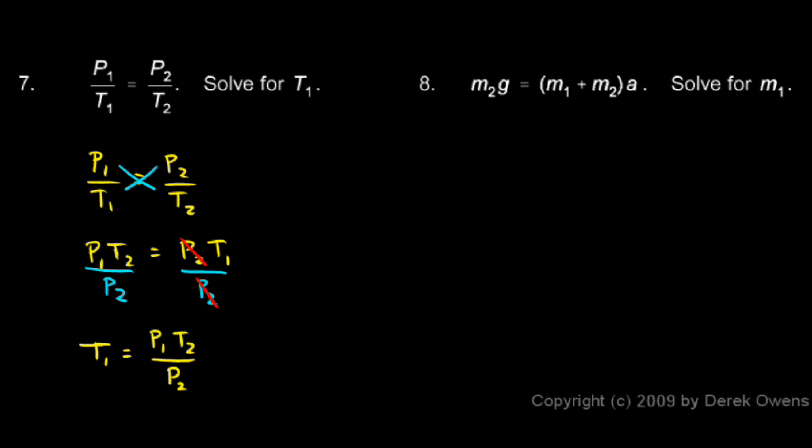So here's what we'll do. I'll start by distributing the A over on the right. So the left side is still M2G. The right side is M1A plus M2A.